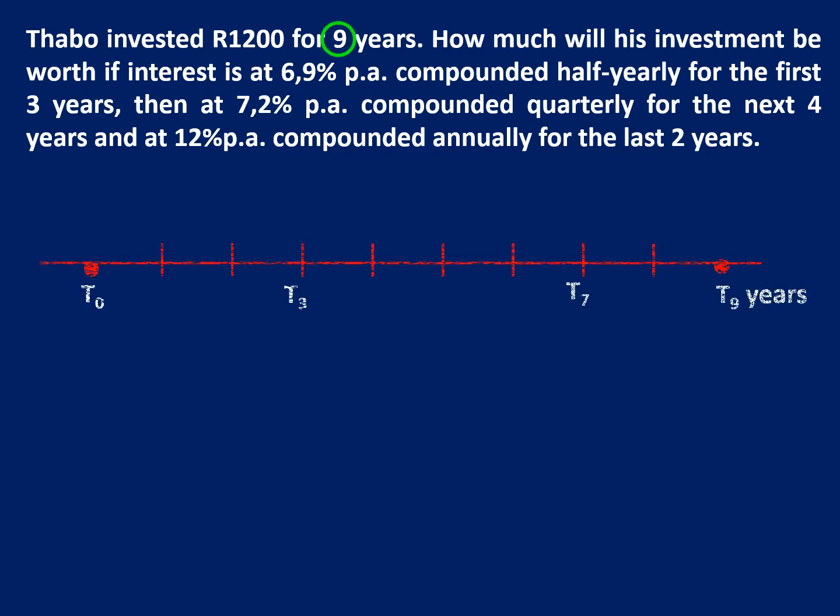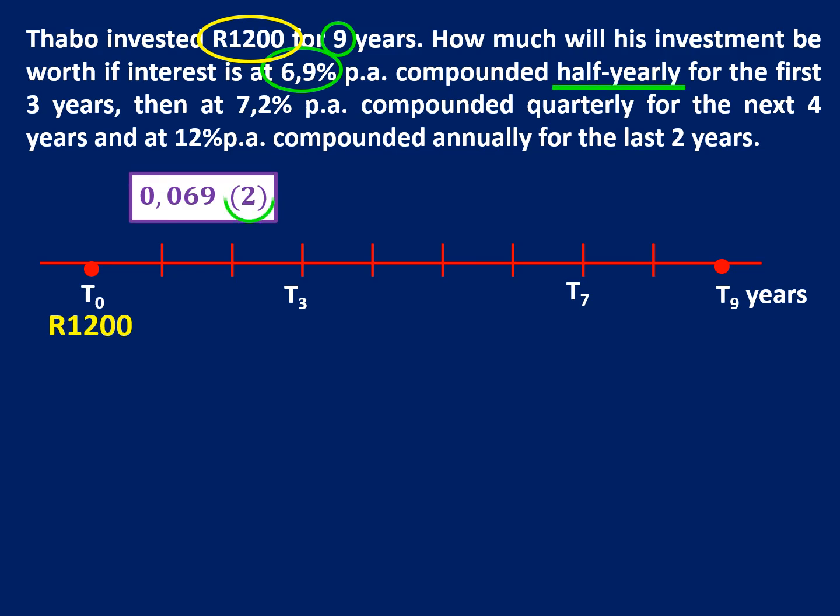Alright so his investment is for a total of nine years. So on the timeline we're just going to write down the different interests. So 6.9% would be 0.069. Half yearly would happen twice.